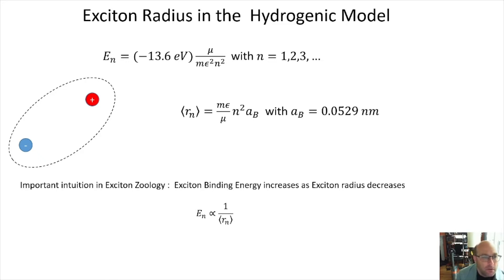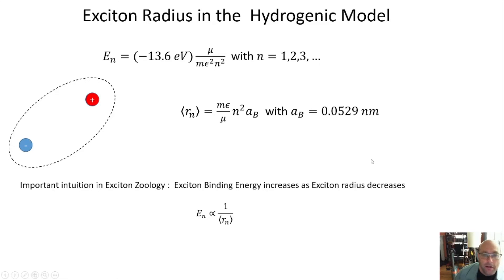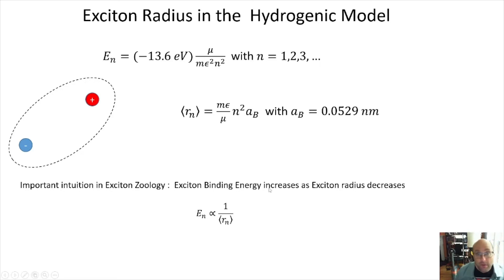In addition to calculating energy levels for this bound state, we can also calculate the average separation between the two particles. The average separation for the nth quantum state is: r_n = (bare mass / reduced mass) × dielectric constant × n² × a_0, where a_0 is the Bohr radius of the real hydrogen atom, equal to 0.0529 nanometers, about half an angstrom. One key piece of intuition: the binding energy increases as the exciton radius decreases, which makes sense — as the charges get closer, the Coulomb attraction is stronger and the binding is stronger.